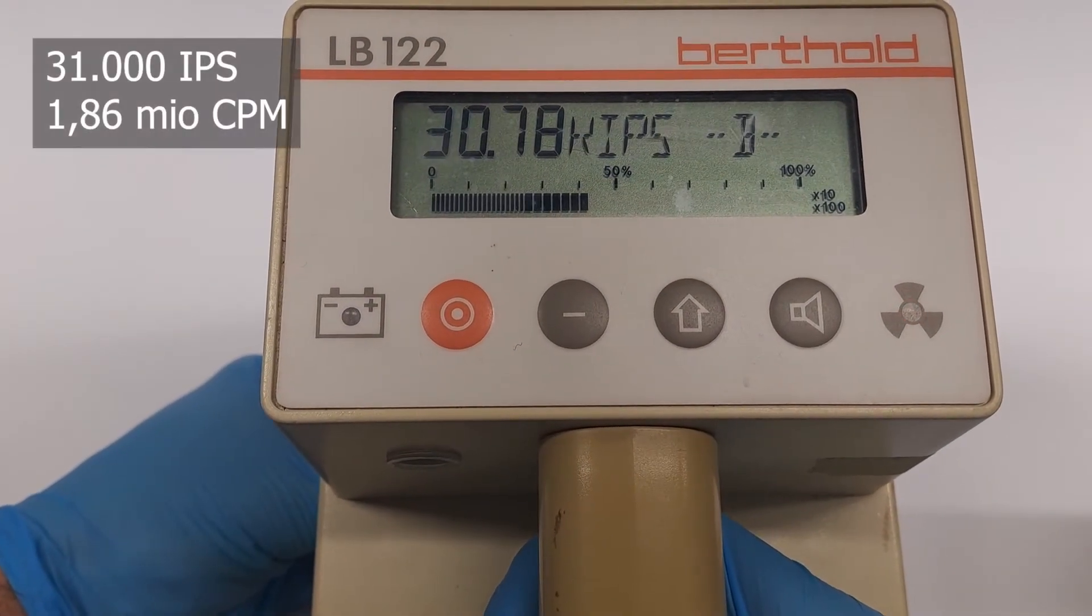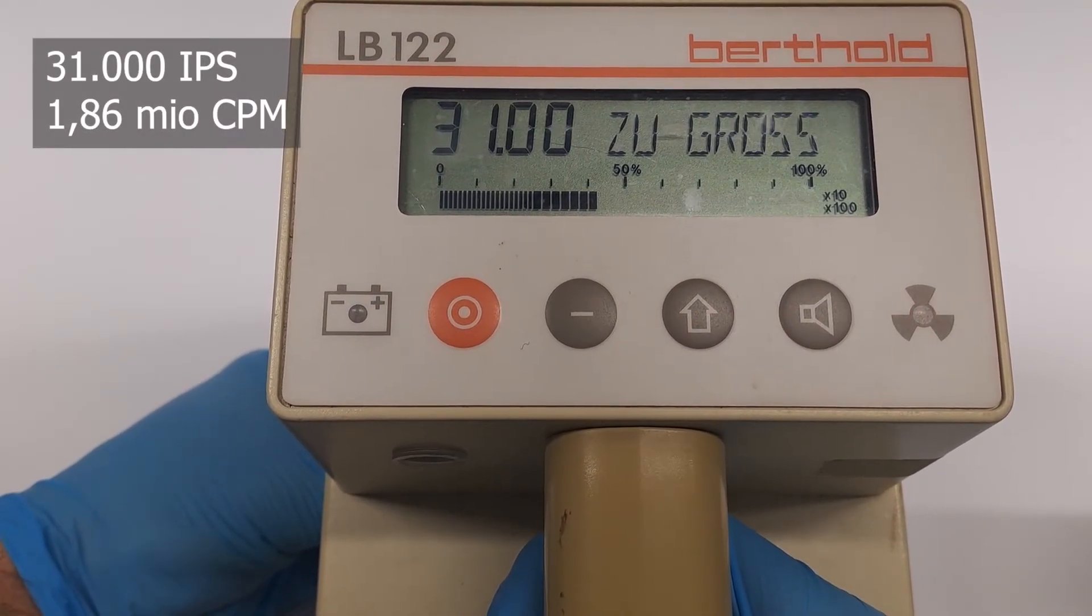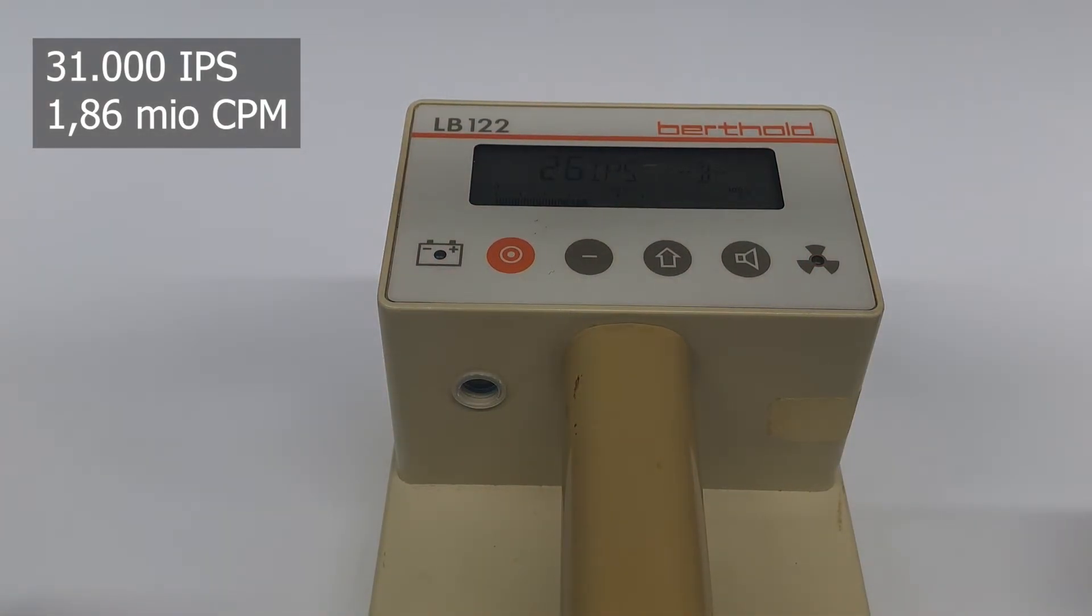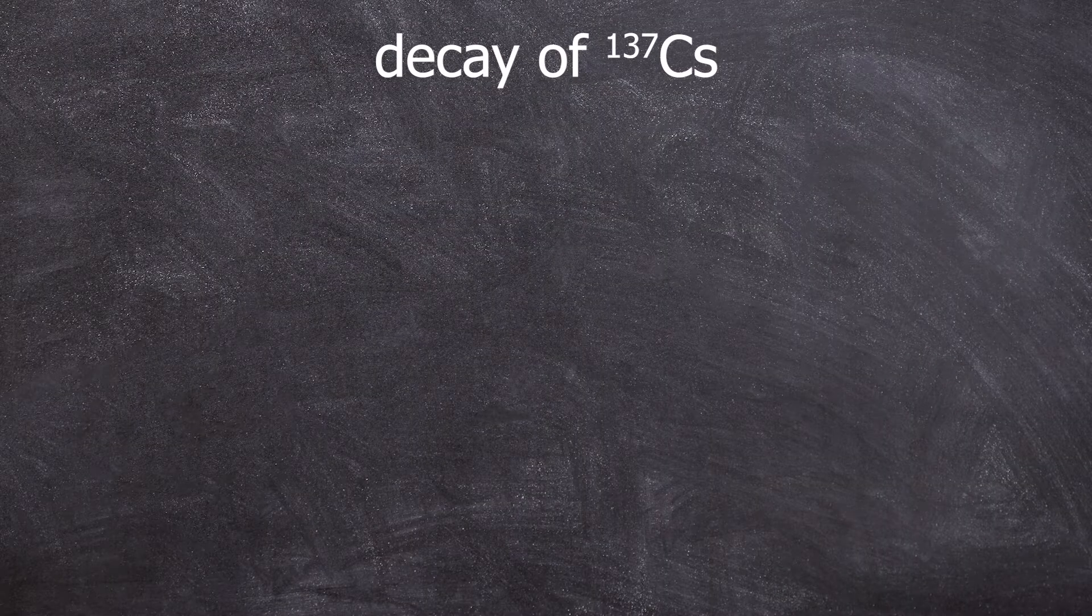I've maxed out the contamination monitor with 31,000 IPS, which is equal to 1.86 million CPM for the Americans. Okay, enough playing around with it.